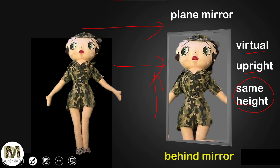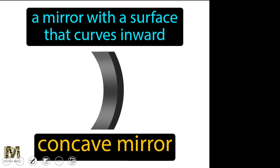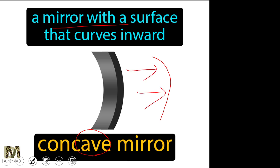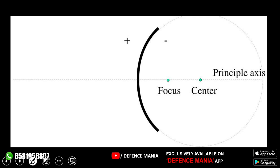Complexity begins where spherical mirrors come in. In spherical mirrors there are two types: concave mirror and convex mirror. A concave mirror has a surface that curves inwards — remember the trick, it forms a cave shape. The shiny reflecting surface faces inward. If you have a curved shape and the reflection is happening on the cave-forming side, that is a concave mirror.